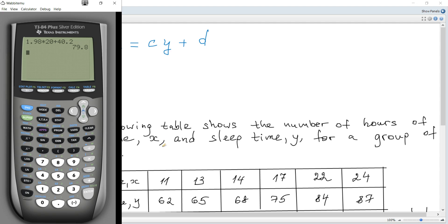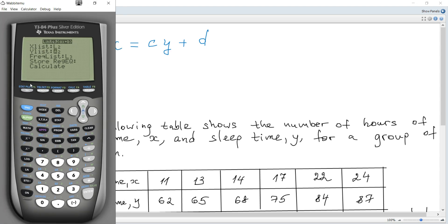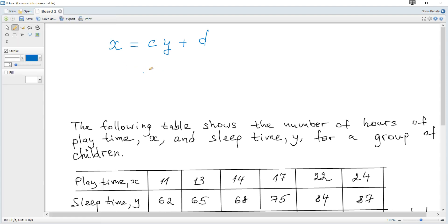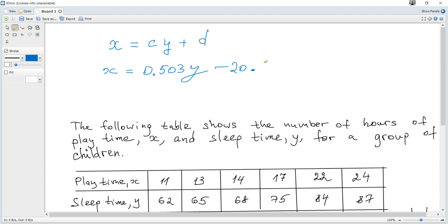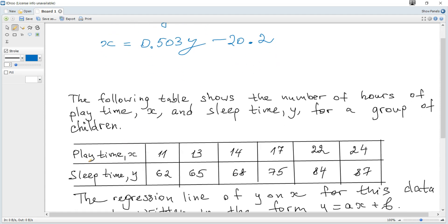And for the calculator, now this y is like x or as x for the calculator. And x is as y for the calculator. So we need just interchange x and y for the calculator. So now it's L2, x as independent. Now it's y. So it's L2 and it's L1. and you get the answer that y is so a is 0.503 and b is minus 20.2. And if you need to estimate playtime x for a given sleep time, you should use this and just substitute in y for y.